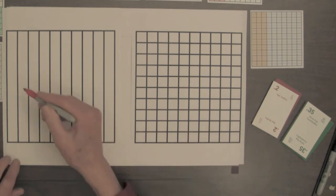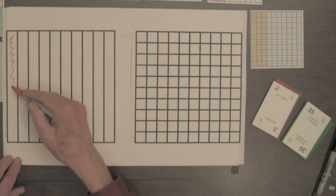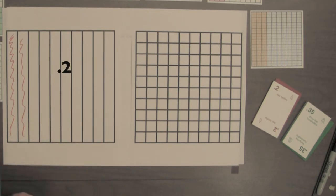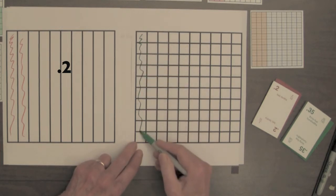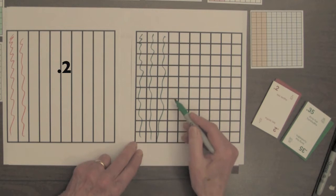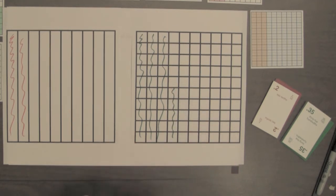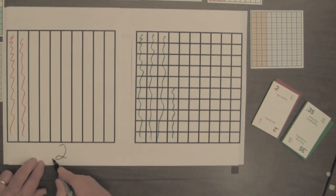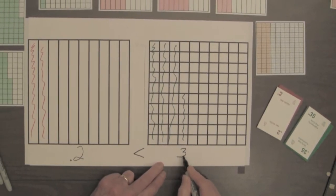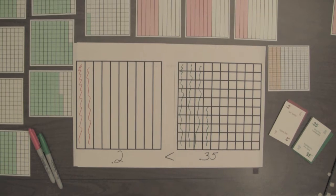So we will shade this square for two tenths. And we will shade the second square for thirty-five hundredths. Ten, twenty, thirty, thirty-five. So now this square has less shading. We have two tenths is less than thirty-five hundredths.